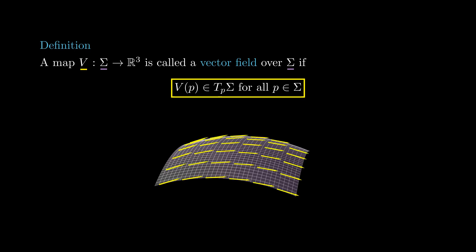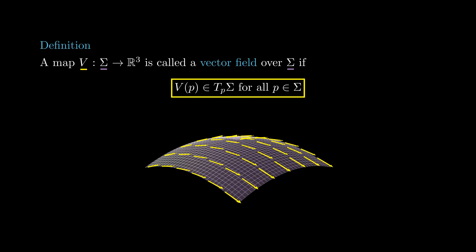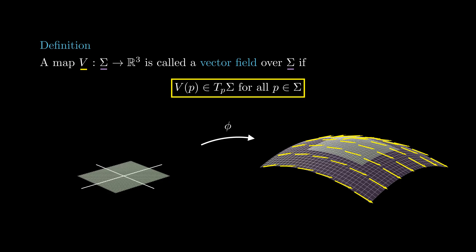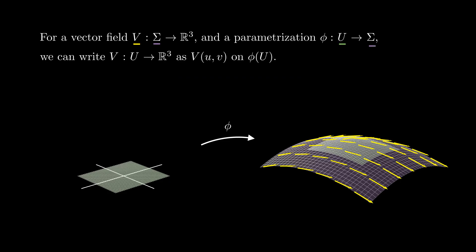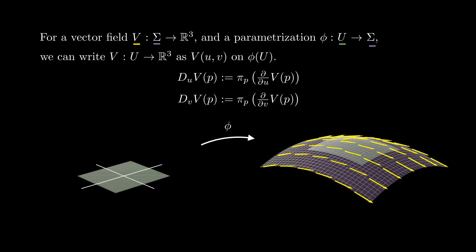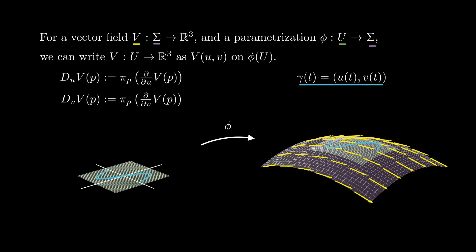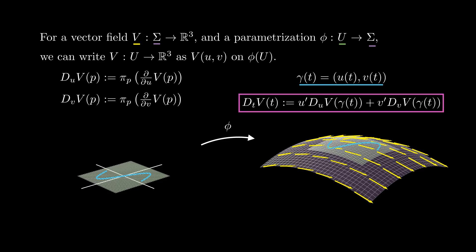A function V that assigns a vector to each point of a surface is called a vector field if for each point p in sigma, V(p) lies in T_p sigma. If we have a parametrization phi from a domain U, then along the image of phi, V depends on u and v, and we can define the covariant derivative of V with respect to u at a point p, denoted D_u V(p), as the orthogonal projection of the partial derivative of V with respect to u at p, to the plane T_p sigma. If one also has a curve gamma(t) = (u(t), v(t)), then the covariant derivative D_t V is given by u' D_u V plus v' D_v V, as a consequence of the chain rule.